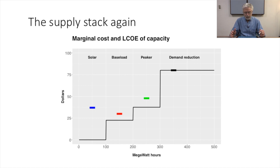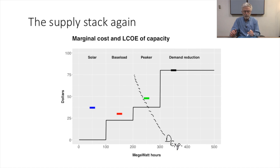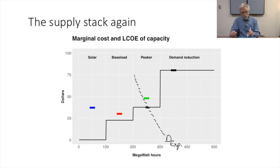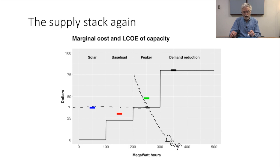Let's go back to our merit order stack. In the day-ahead market, we have a demand forecast — the expected demand — which would have us running some peaker units, our base load, and our zero marginal cost renewable resources. The price established for power in the day-ahead auction would clear at the price of the peaker power plant, and that sets the price for all power plants. Base load will be earning some scarcity rents, and solar is just hitting above its levelized cost of energy if the peakers are setting the price of electricity.